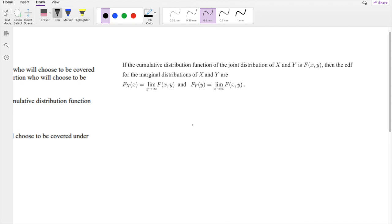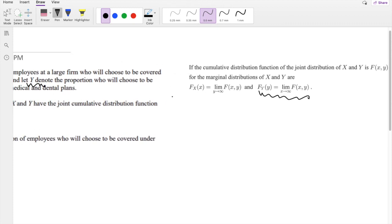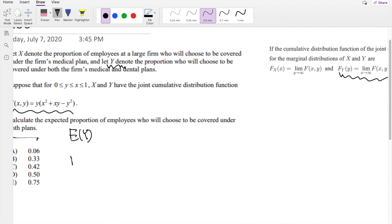The CDF of marginal distribution is given right here. So if we're trying to find it from a CDF of a joint distribution, the CDF of a marginal distribution is this. So basically, the F of Y is equal to limit as X goes to infinity of F(X, Y).